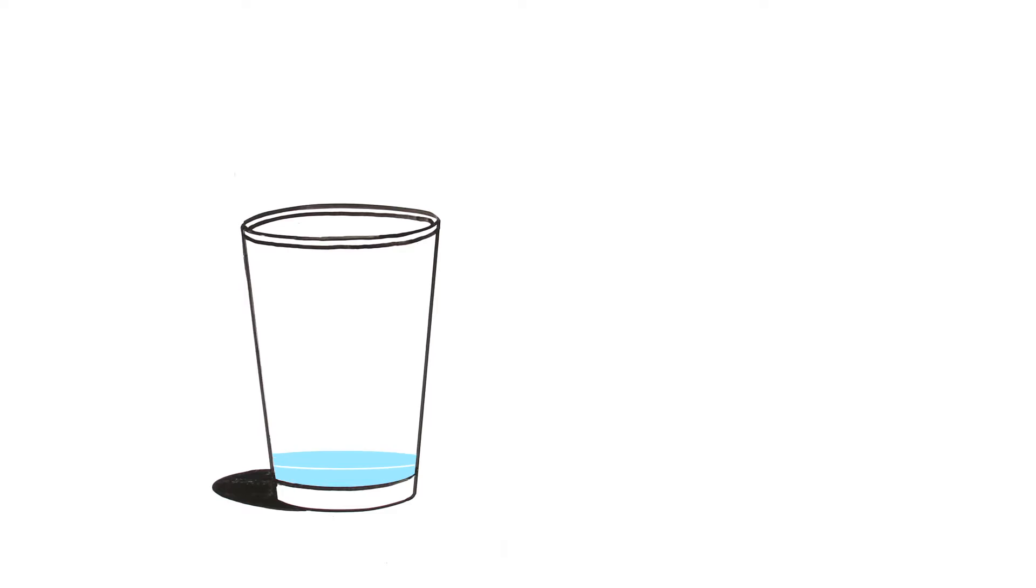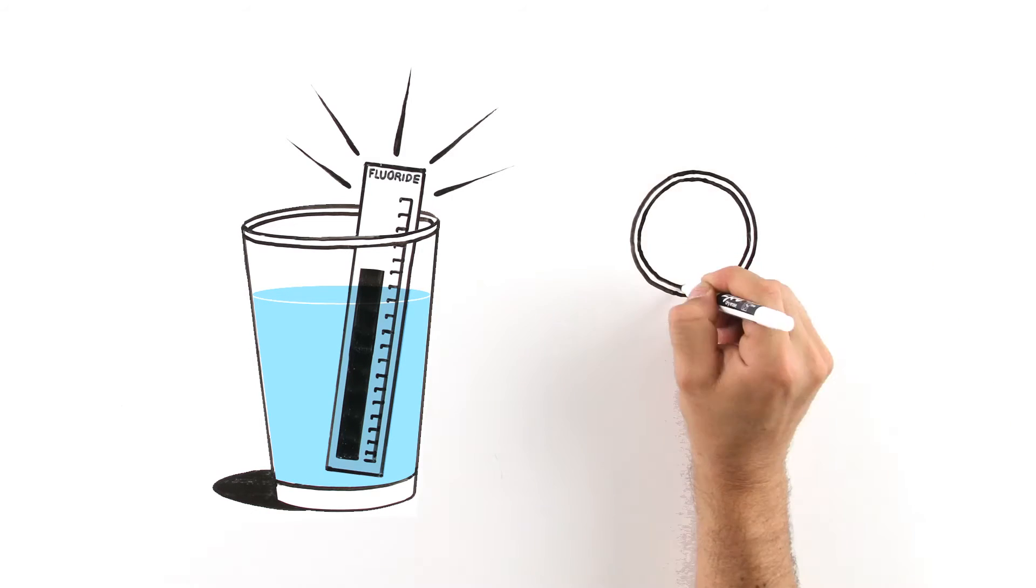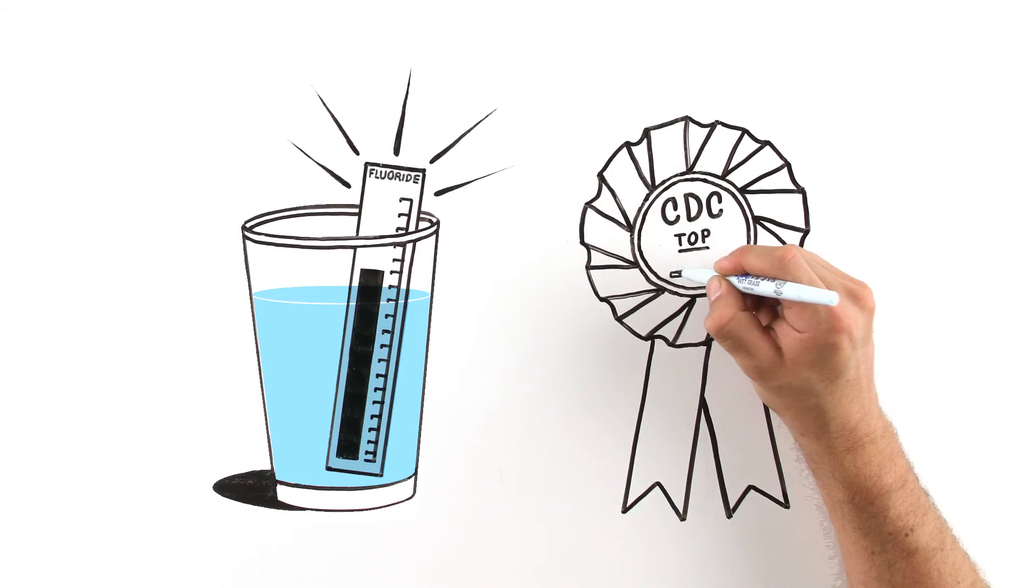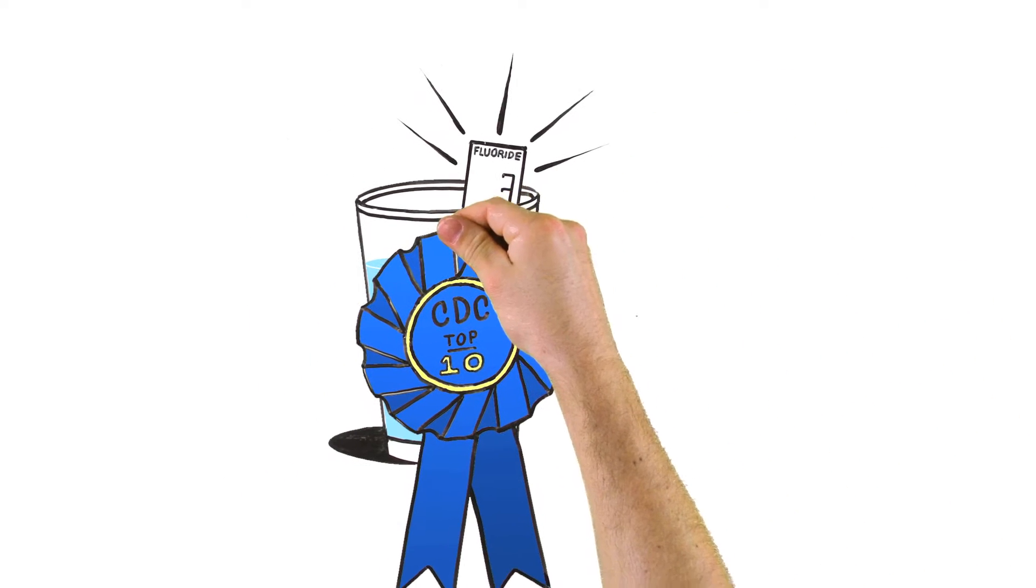Fluoride occurs naturally in most drinking water, and at certain levels, fluoride can stop or even reverse the tooth decay process. Because water fluoridation is effective and inexpensive, it's no surprise the Centers for Disease Control named water fluoridation one of the 10 great public health interventions of the 20th century.